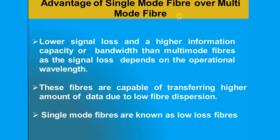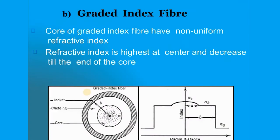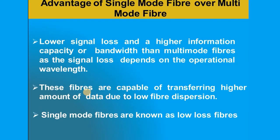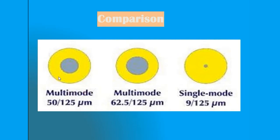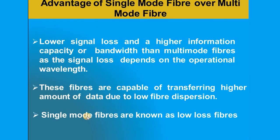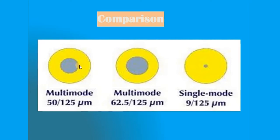Now for a comparative study of single mode versus multi-mode fiber. Single mode fiber has lower signal loss and transfers a high amount of data. Multi-mode fiber has a larger core radius — from 50 to 125 micrometer core diameter, or 62.5 to 125 micrometer. Single mode fiber needs only a single ray path, so the diameter of the core is very small.